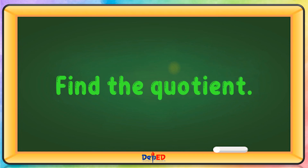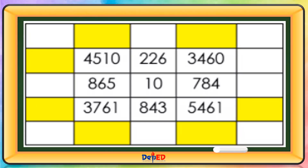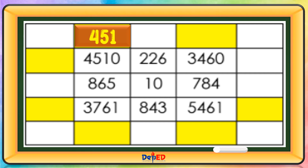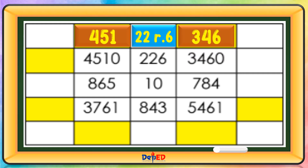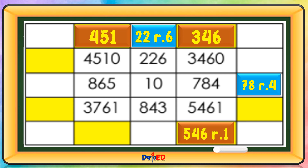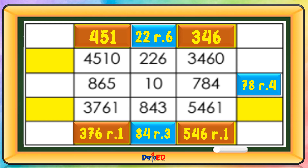Find the quotient. 4,500 divided by 10 equals 451. 226 divided by 10 equals 22, remainder 6. 3,460 divided by 10 equals 346. 7,800 divided by 10 equals 78, remainder 4. 5,461 divided by 10 equals 546, remainder 1. 843 divided by 10 equals 84, remainder 3. 3,761 divided by 10 equals 86, remainder 5.